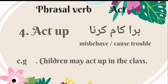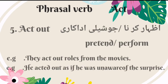The fourth phrasal verb of act is 'act up.' Its meaning is misbehave or cause trouble — Urdu mein is ka matlab hooga bura kaam karna ya bura raviyya rakna. Its example is: children may act up in the class. The fifth phrasal verb is 'act out.' It means to pretend or to perform — Urdu mein is ka matlab hooga izhaar karna ya joshili adakari karna. The sentence would be: they act out roles from the movies, or he acted out as if he was unaware of the surprise.